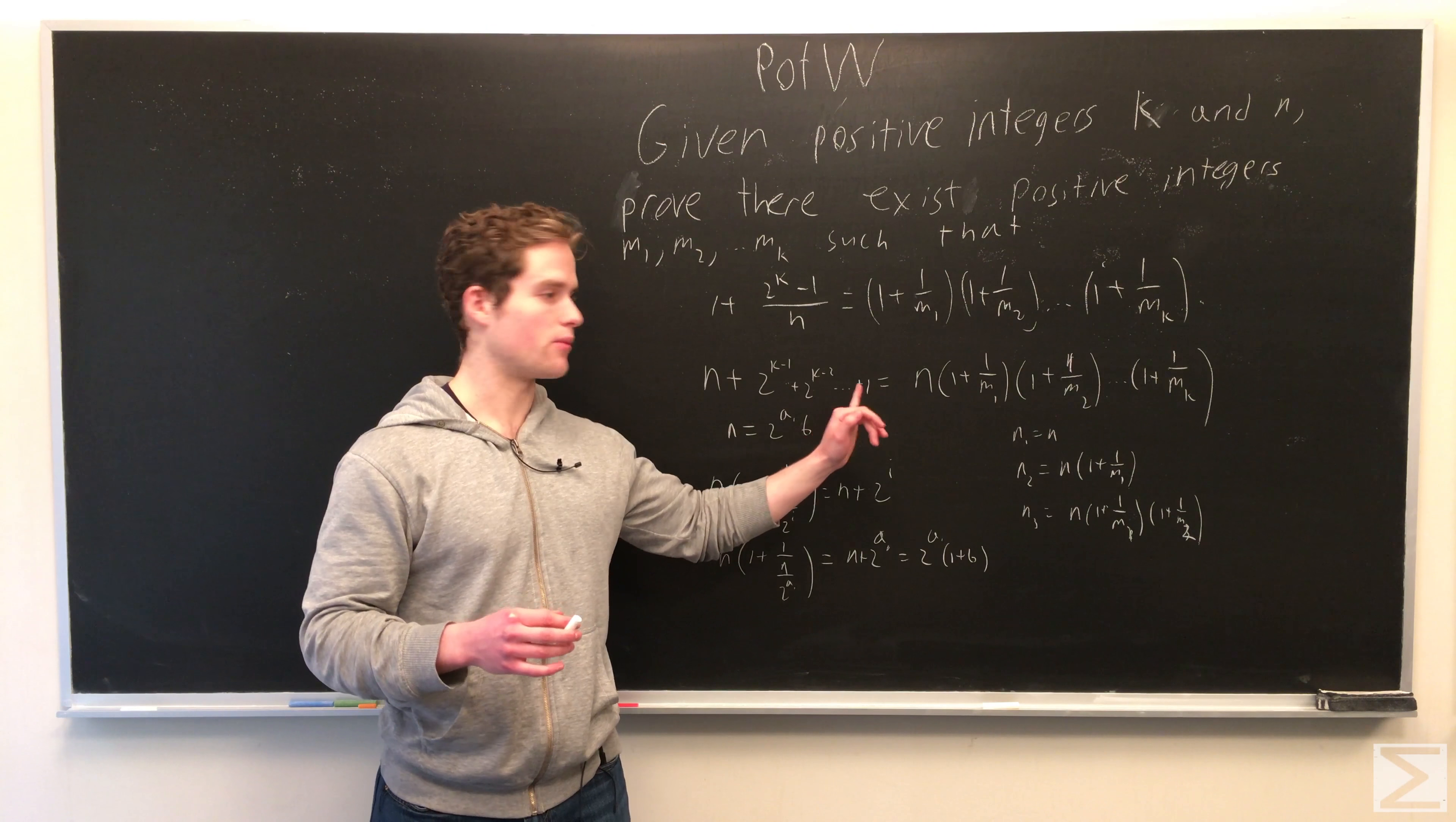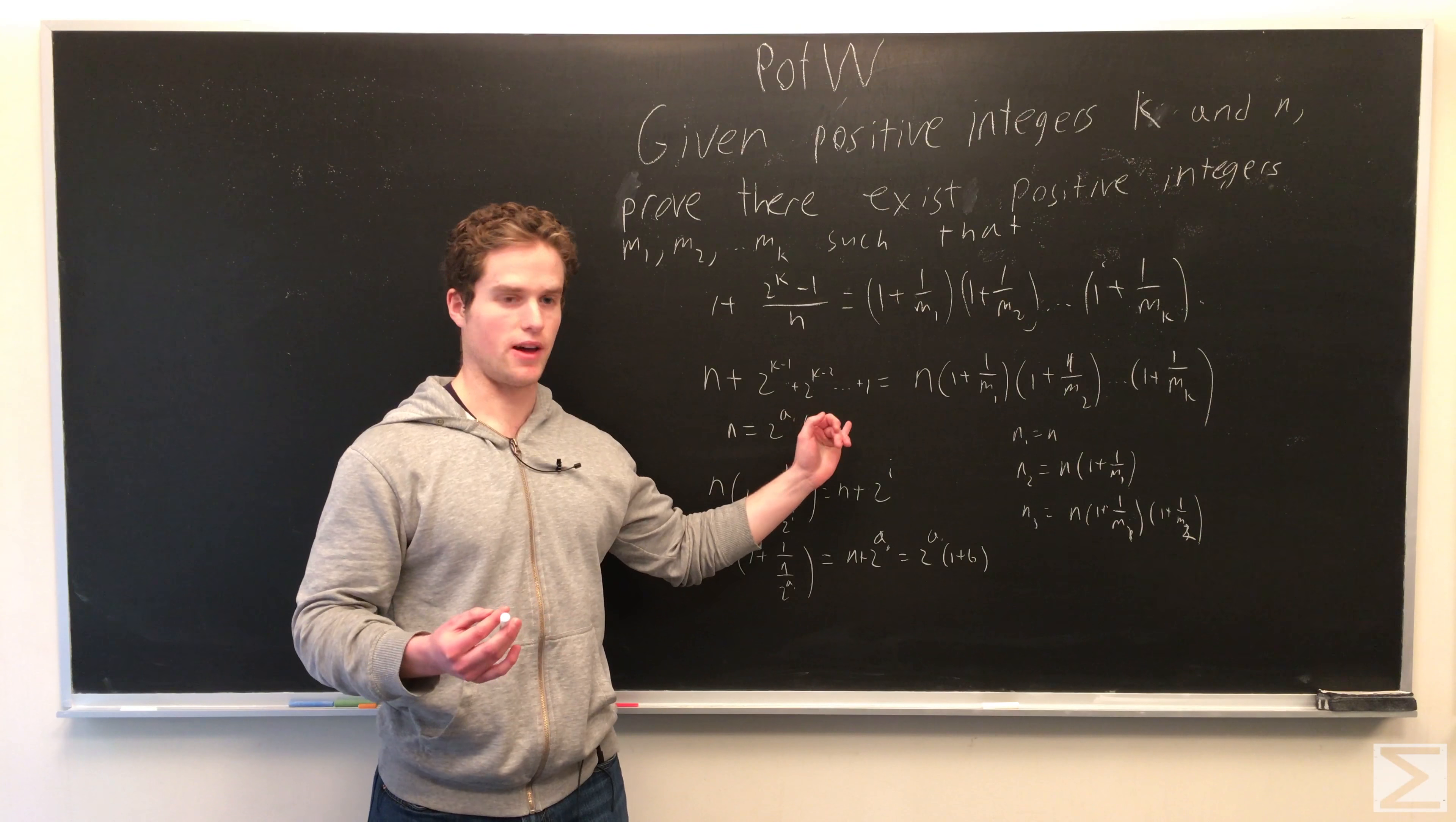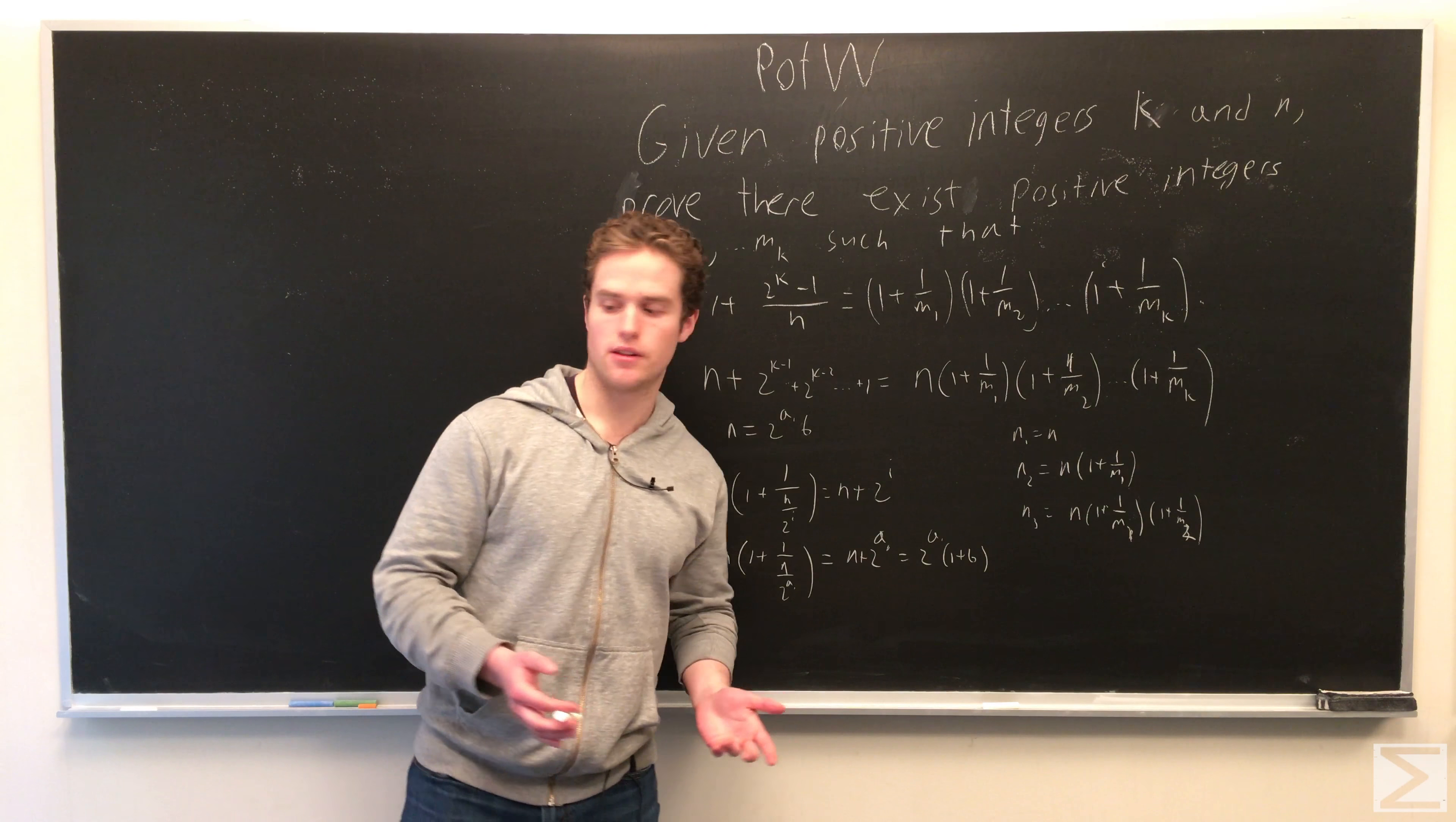So then if we start at a1, then we can say our next one is nj over 2 to the a1 minus 1, because it will definitely be divisible by that. And then we can just keep going down. And that will be how we reconstruct these numbers.